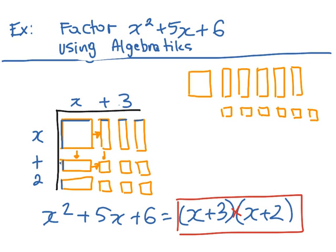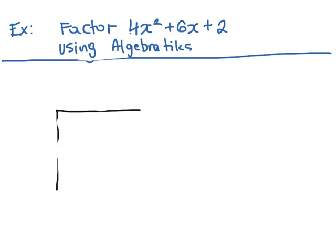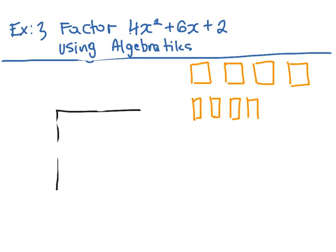We'll do one more question, which is a little bit more challenging. In this case, we'll go into our third example, factor 4x squared plus 6x plus 2. Let's first pick our algebra tiles. Now we have four large squares. And then we have six long rectangles. And we have two small squares.